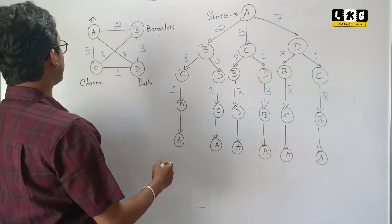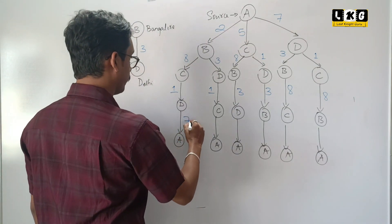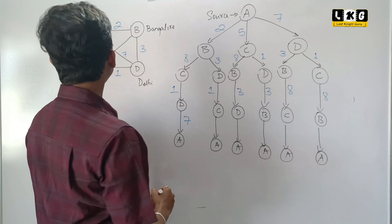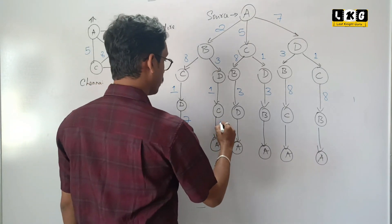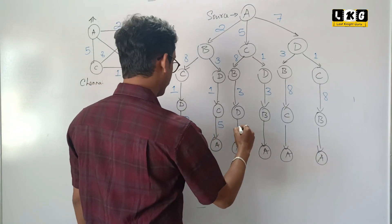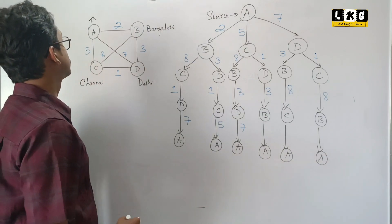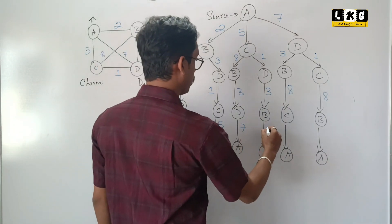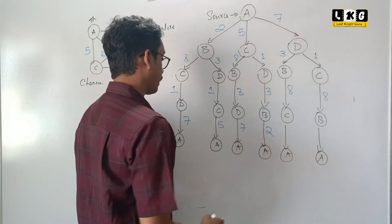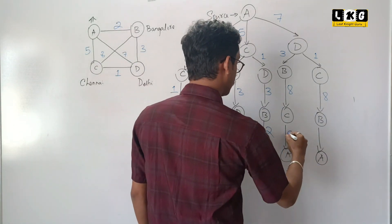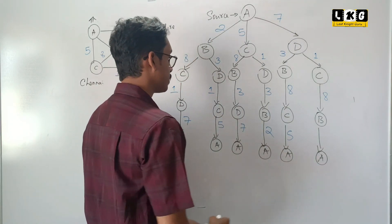Same thing, from D to A — the cost is 7. C to A — the cost is 5. D to A — the cost is 7. B to A — the cost is 2. C to A — again 5. And B to A — it is 2.